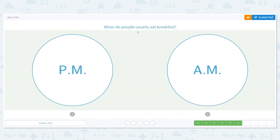When do people usually eat breakfast? Breakfast. Get up, you eat breakfast: pancakes, cereal, waffles. Would that be P.M. or A.M.? A.M., because A.M. is morning.